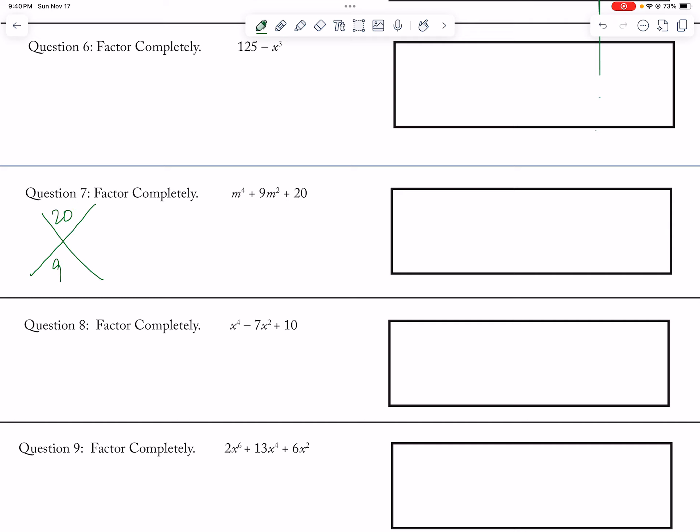20 and 9, so 5 and 4, so m to the 4th plus 5, m to the 4th plus 4.